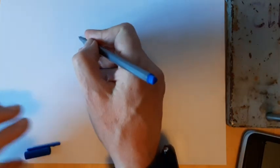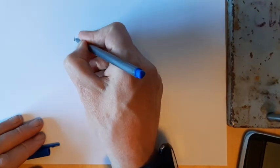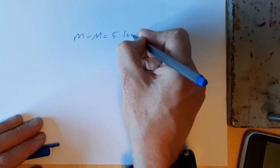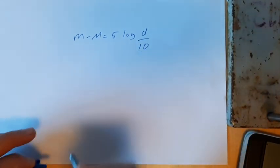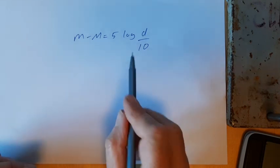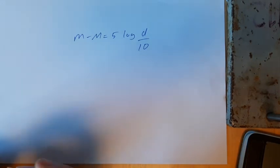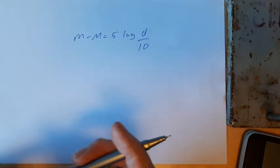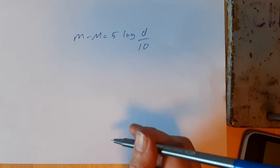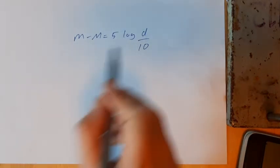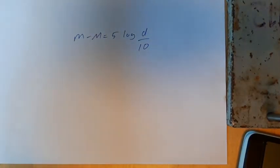So the equation for this, and as ever sometimes the equation is easier than getting your head around this stuff, is simply: m minus M equals 5 log d over 10. Really important health warnings: that is log to the base 10, and d is the distance to the star in parsecs. That's possibly two years of physics with me, the first equation where d is going to be measured not in meters but in parsecs.